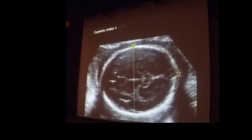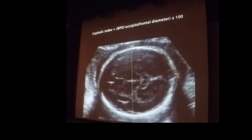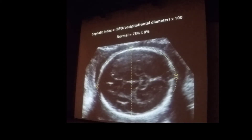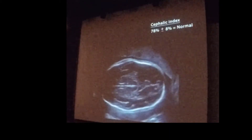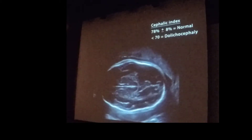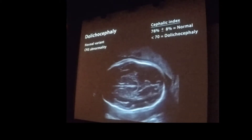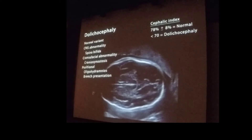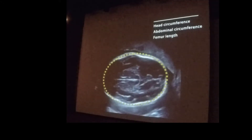The cephalic index is the biparietal diameter divided by the occipitofrontal diameter times 100, where the occipitofrontal diameter is measured from the occiput to the frontal bone. A normal cephalic index is 78% plus or minus 8%. A cephalic index below the normal range indicates dolicocephaly, which may be a normal variant or may be observed with central nervous system abnormalities such as spina bifida, craniofacial abnormalities such as craniosynostosis, or positional causes like oligohydramnios or breech presentation. With dolicocephaly, only the head circumference, abdominal circumference, and femur length should be used to calculate gestational age.